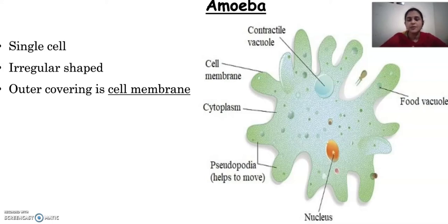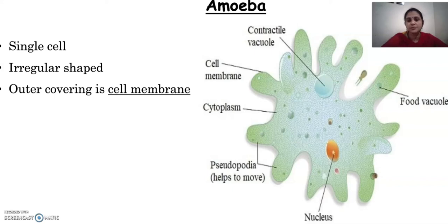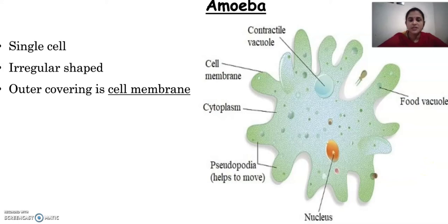Now we will discuss how an amoeba moves. Amoeba consists of many pseudopodia, and if it wants to move, it extends one pseudopodium towards one direction. The cytoplasm flows into that direction, extends the pseudopodium, and that helps in movement. The movement of amoeba is known as amoeboid movement.